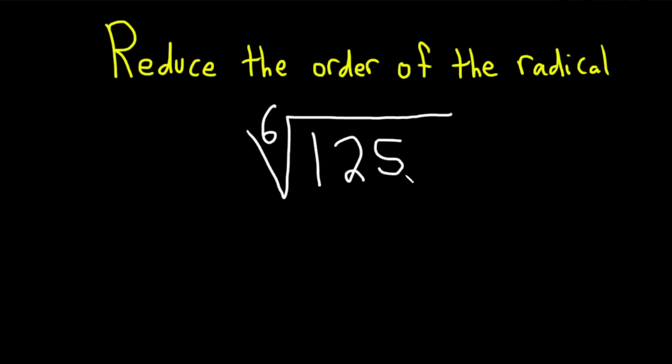So 125 can be written as 5 cubed, so this is really the 6th root of 5 to the 3rd power.